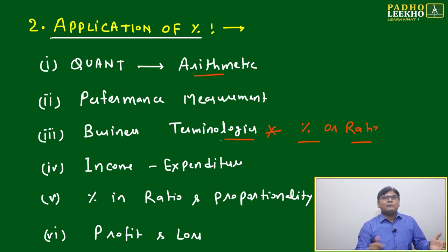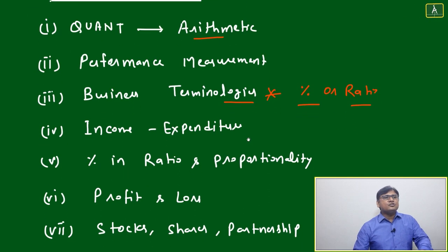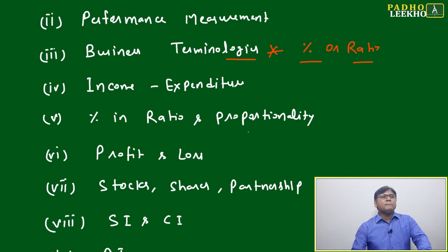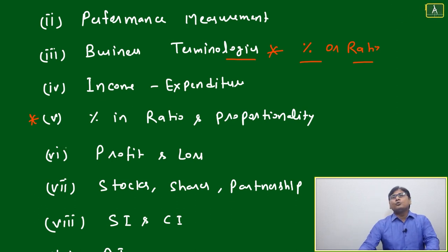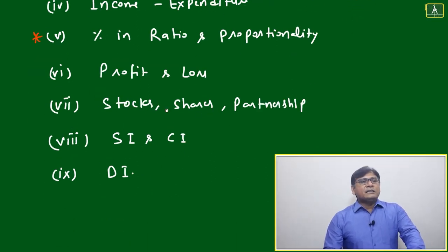Next is your income and expenditure - we have seen already percentage in ratio and proportionality. This is another important area we have to learn. If it is given in ratio and proportion, how percentage will be applicable.